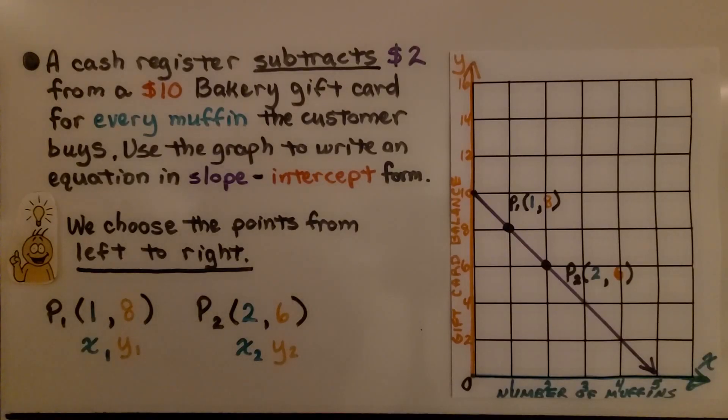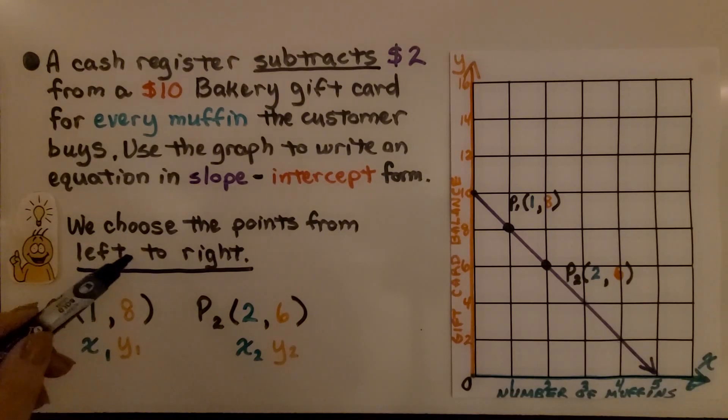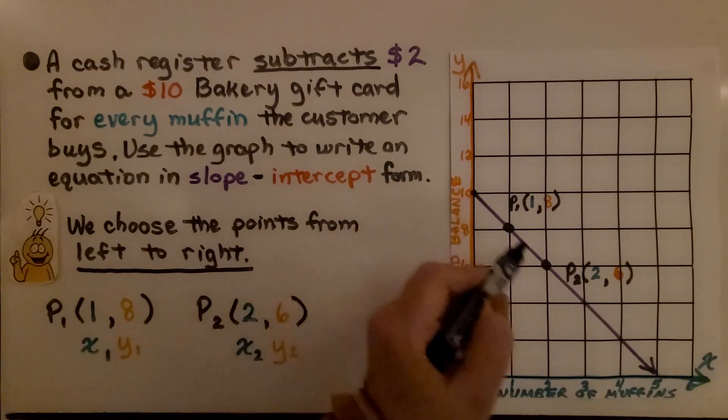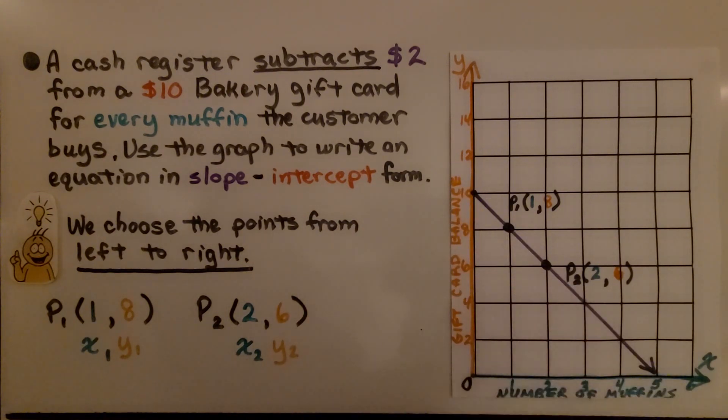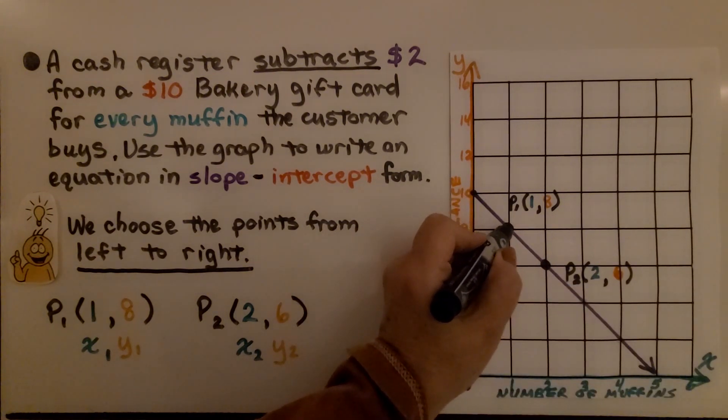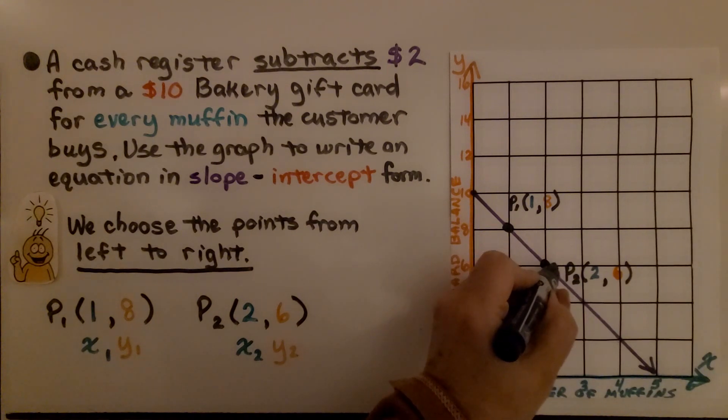A cash register subtracts $2 from a $10 bakery gift card for every muffin the customer buys. Use the graph to write an equation in slope-intercept form. I want you to remember that we choose the points from left to right. It's falling to the right. We know this is a negative slope.